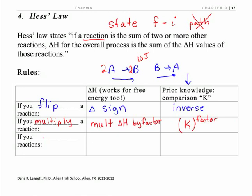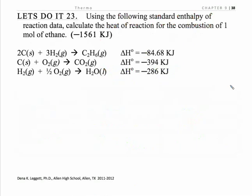Now if you add reactions, in K world we multiplied our K values. Here, if you add reactions, you simply add the delta H values. So let's see this in action.